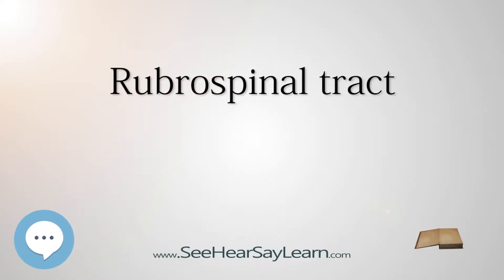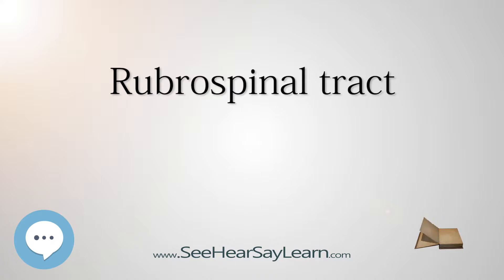The rubrospinal tract is a structure in the midbrain. It originates in the magnocellular red nucleus, crosses to the other side of the midbrain, and descends in the lateral part of the brainstem tegmentum. In the spinal cord, it travels through the lateral funiculus, coursing adjacent to the lateral corticospinal tract.